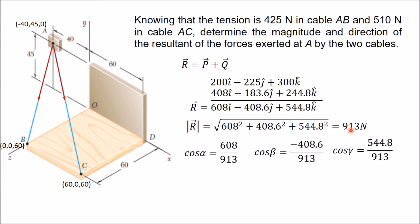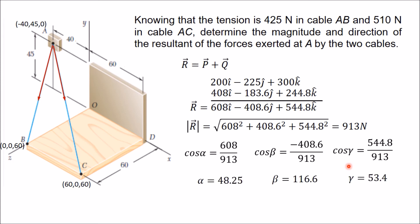To find the unit vector along R, divide R by 913 N. In the unit vector of R, the coefficients of i, j, and k are cos α, cos β, and cos γ, where α, β, and γ are the angles made by the resultant with the X, Y, and Z axes respectively. This gives cos α = 608/913, cos β = −408.6/913, and cos γ = 544.8/913, yielding α = 48.25°, β = 116.6°, and γ = 53.4°.